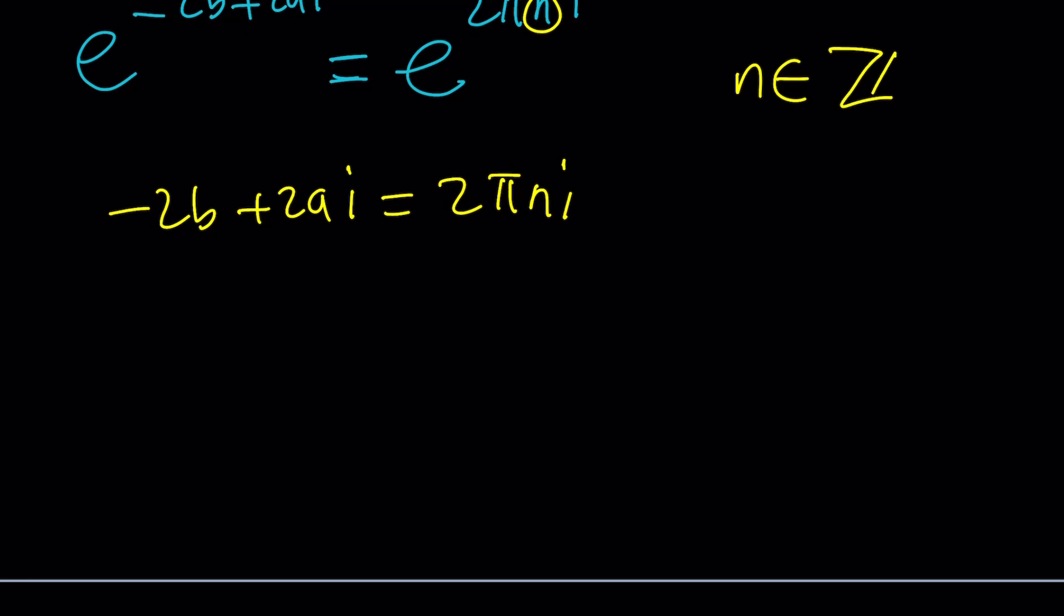So, from here, there's no real part on the right-hand side. So, negative 2b must be zero and 2a must be 2 pi n. Make sense? The i cancels obviously.